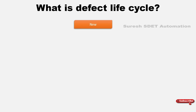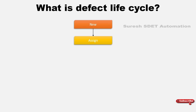This is the stage where we create a new defect. After that, in the next stage, we have 'Assign.' As soon as we create a defect, it has to be assigned to one of the developers, so that they can review what the actual defect is.